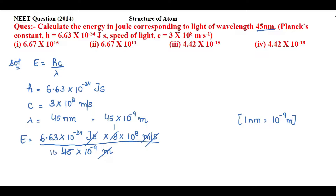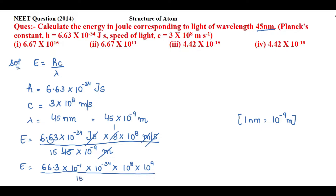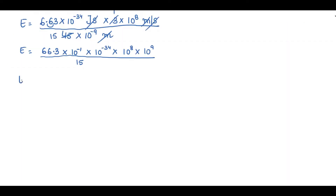3 divided by 45 gives 1/15. Since 6.63 is smaller than 15, to make calculations easier I'll shift the decimal one place to the right: 6.63 × 10⁻³⁴ becomes 66.3 × 10⁻¹ × 10⁻³⁴. The 10⁻⁹ in the denominator moves to the numerator as 10⁹. So we get 66.3 divided by 15 equals 4.42, and the unit is joules.